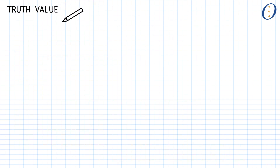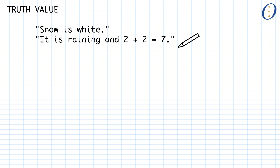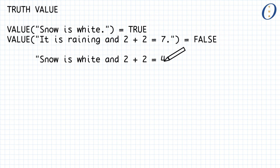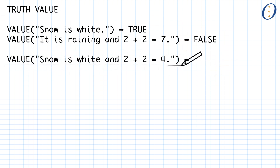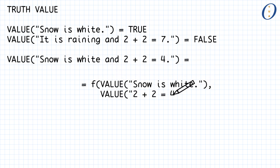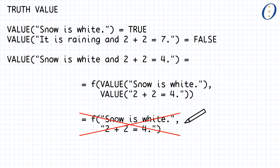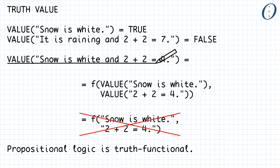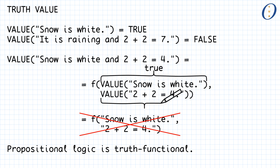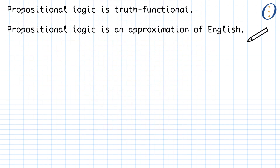The most important concept to discuss next is that of truth value. By definition, any proposition — be it atomic or molecular — has a truth value. The truth value of a proposition is either true or false. An important trait of propositional logic is that the truth value of a molecular proposition is considered to depend only on the truth values of its component propositions. In our example conjunction, the truth value of the two conjuncts is true, and therefore the entire conjunction is also true. This property of being truth-functional means that propositional logic is only a rough approximation of English or of whatever language you speak natively.